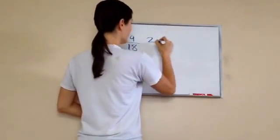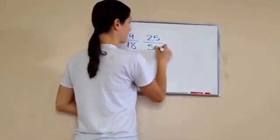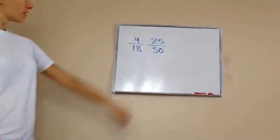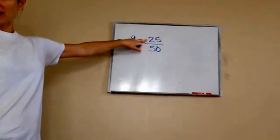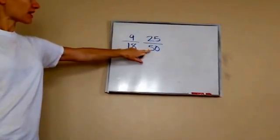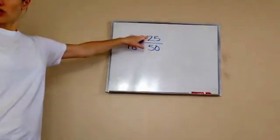All right, try this number. What if I cut the pizza into fifty slices and I want to fill in twenty-five of them? Would this be half of the pizza? Yes. Yes, because half of fifty is? Twenty-five. Do you see how it works?